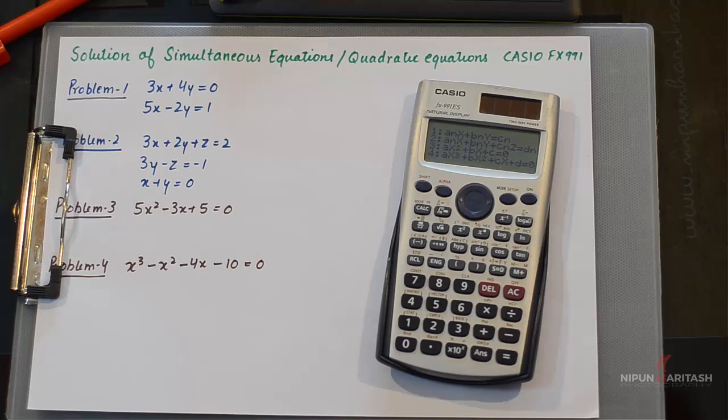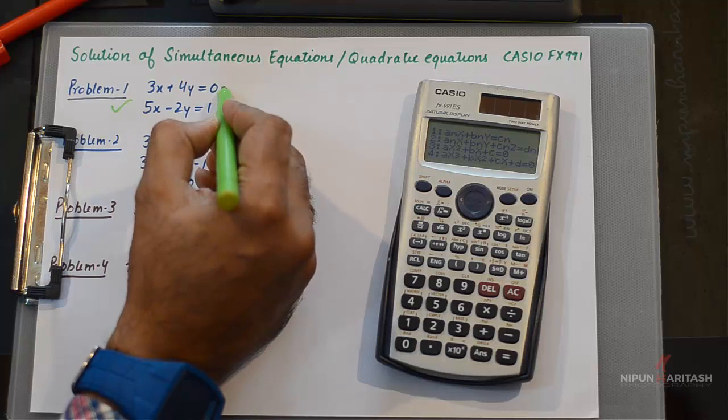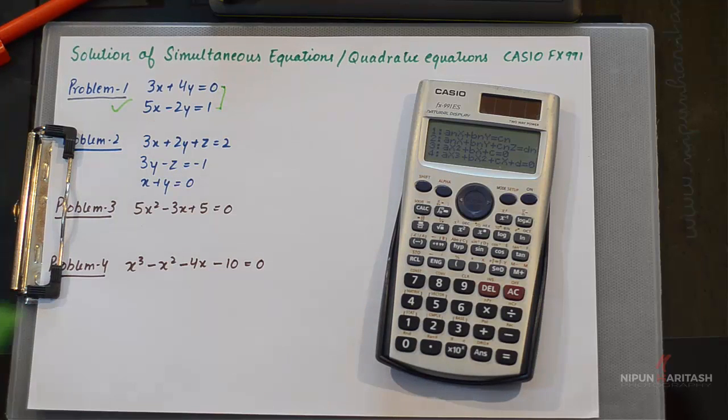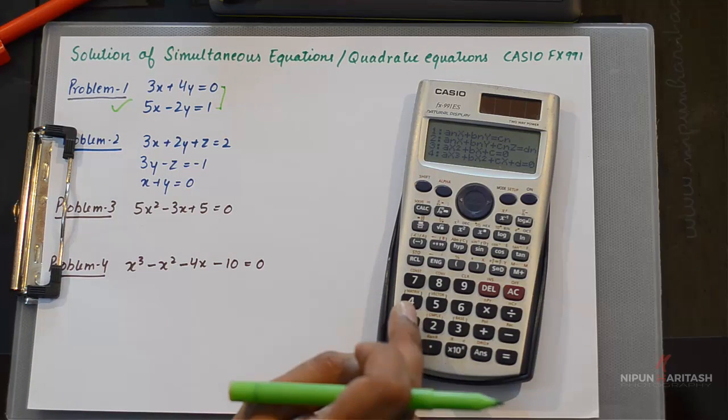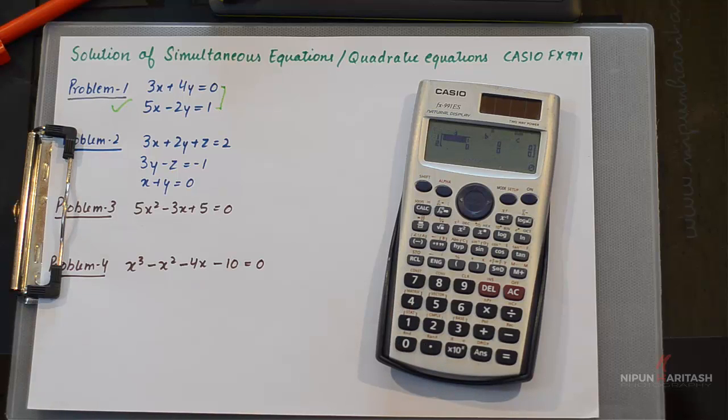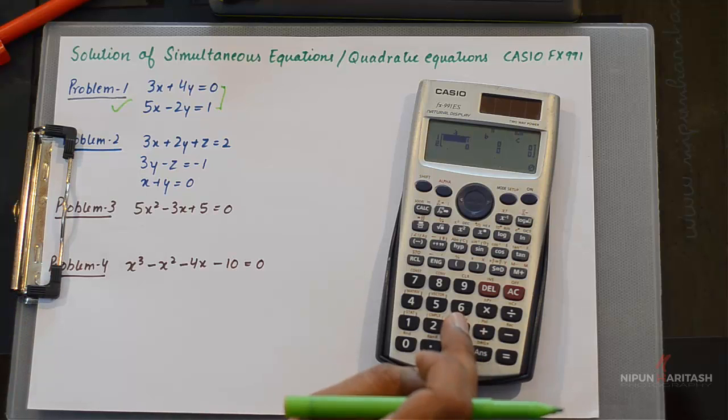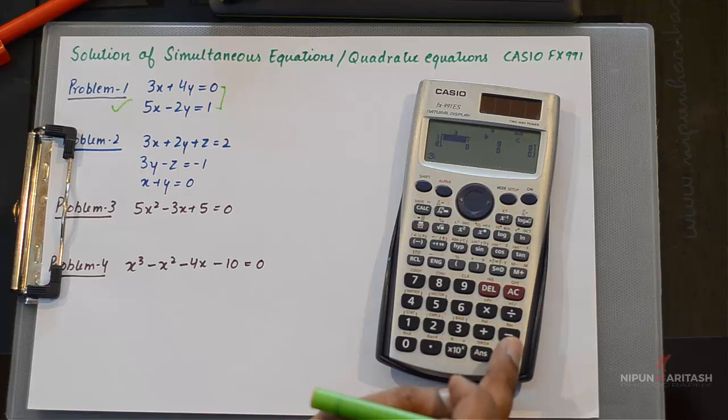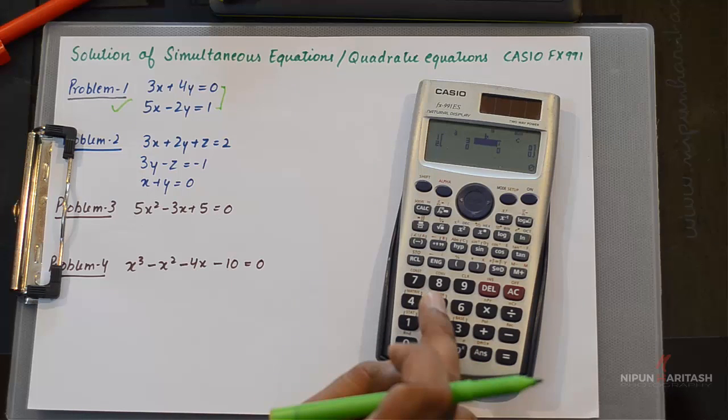Let us begin by solving this problem where I have to find the values of X and Y for this set of equations. For that, I'll press 1. Now it asks you to enter the coefficient of X, which is 3 from the first equation. Then you press equal.